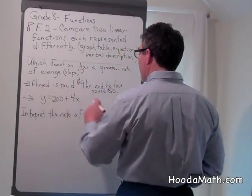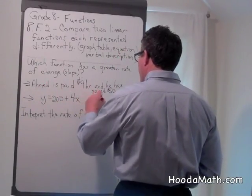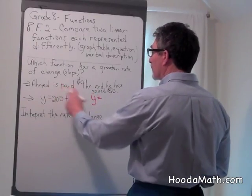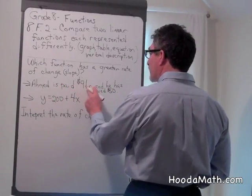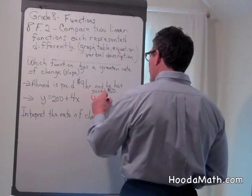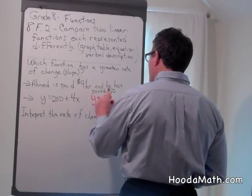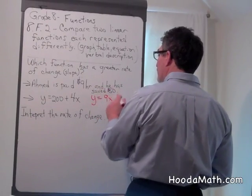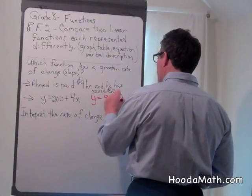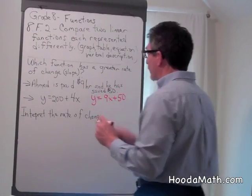So I'm going to say Ahmed, y equals, this is the rate, $9 per hour. So that's 9 times x, and he's already saved $50. So this is what he had before he started making money.